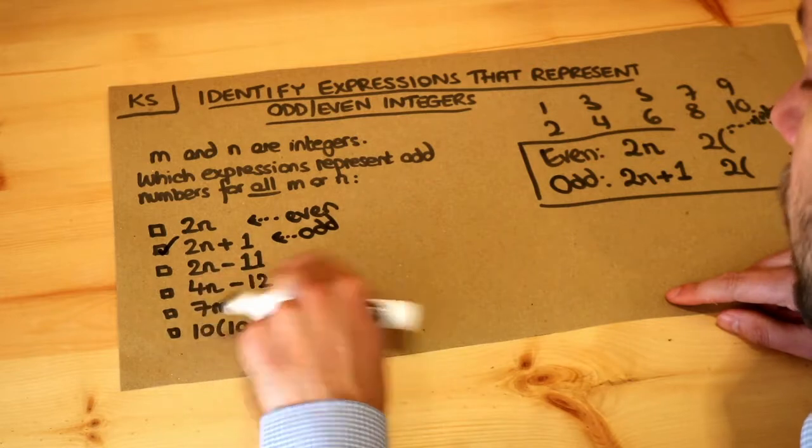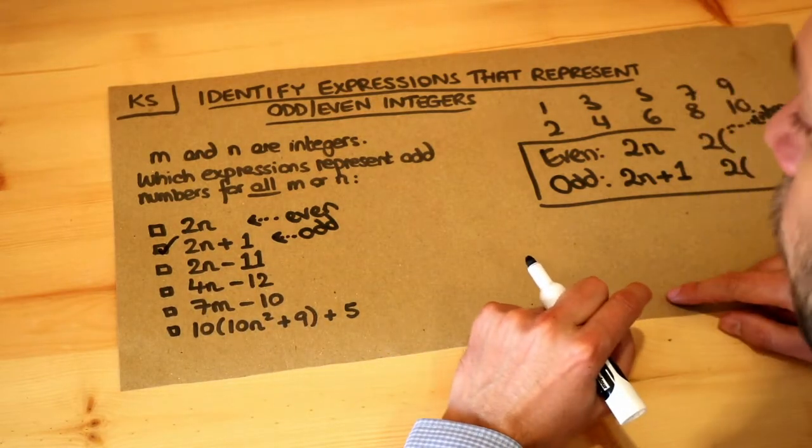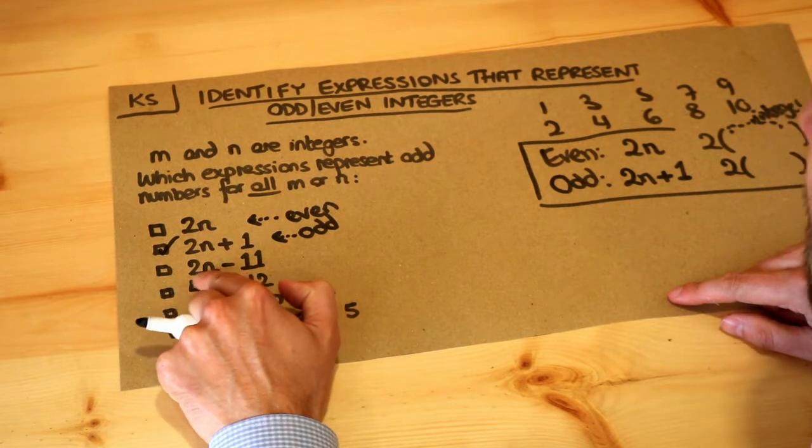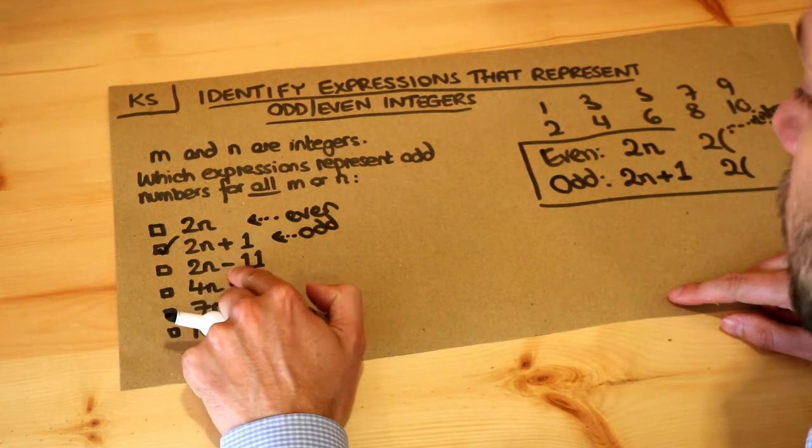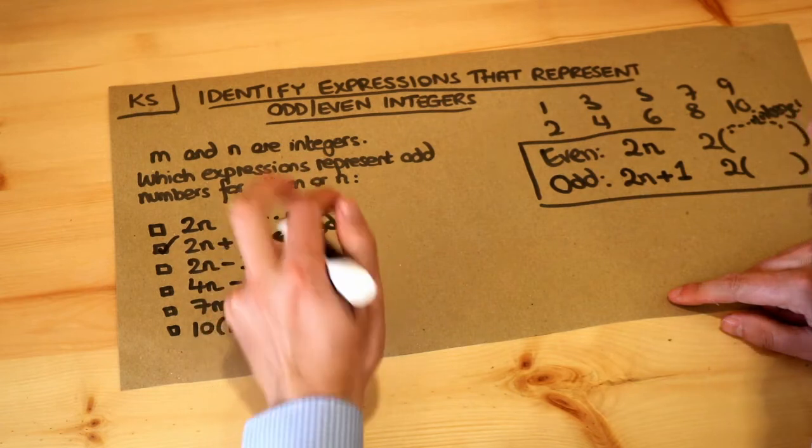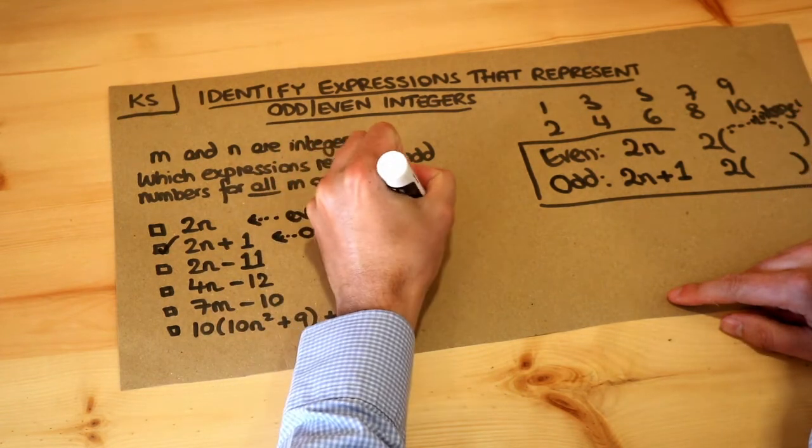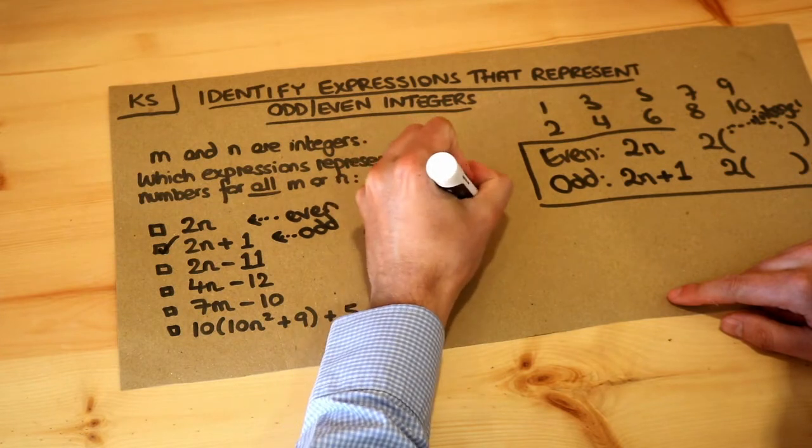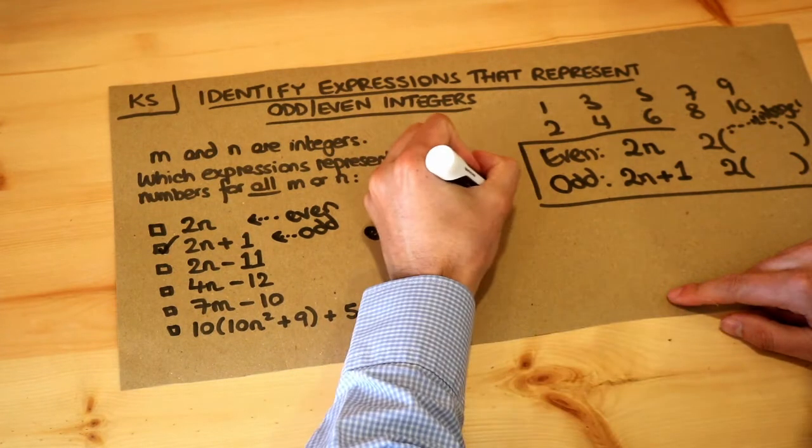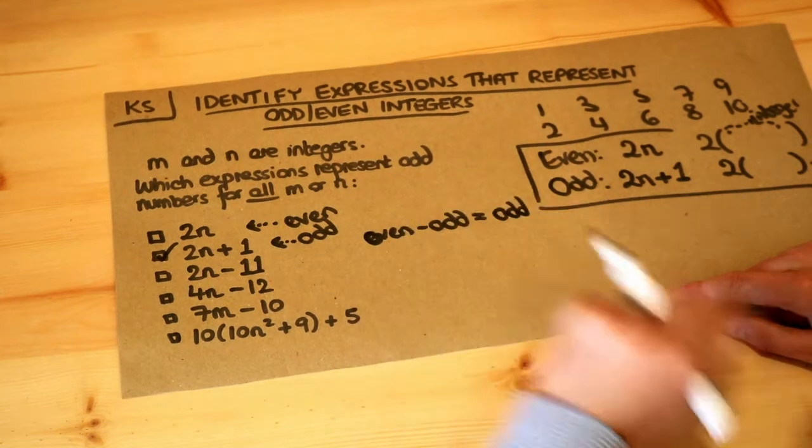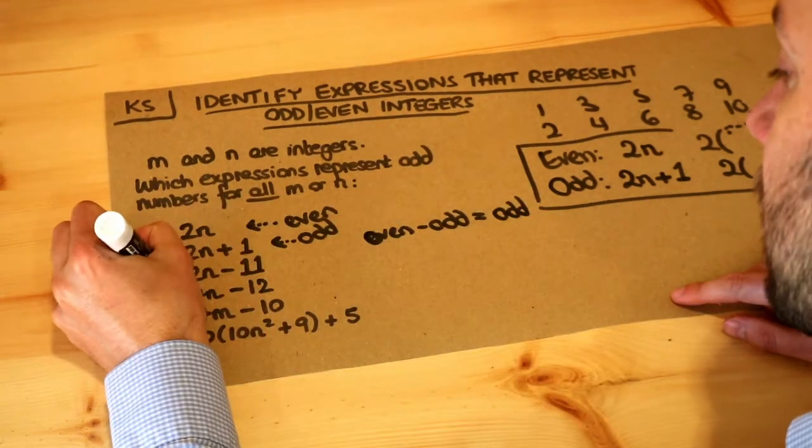What about 2n minus 11? Well, one way we could think about it is that we have an even number—2 times an integer is guaranteed to be even. Then we're subtracting an odd number. So if we were to do even and then subtract an odd number, what would that be? Well, that's guaranteed to be odd. Just think of an example: take any even number, subtract an odd number, you're going to get an odd number. So this is guaranteed to be odd.